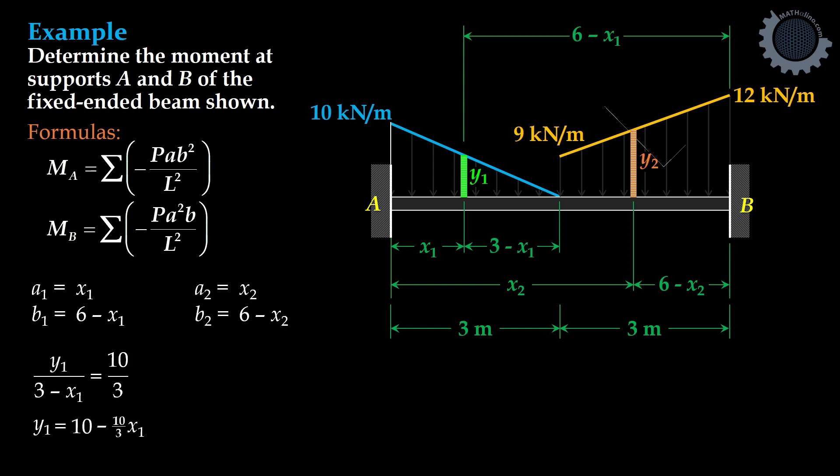From this triangle, we can do proportion. Y2 minus 9 over X2 minus 3 is equal to 3 all over 3. So we have the value of Y2 equal to X2 plus 6.